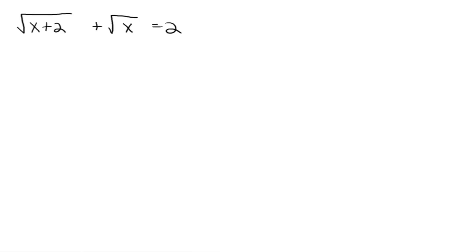This one's got a couple of radicals in it. The most common error made is to just square each individual part and get x plus 2 plus x is equal to 4. But that is not even close to being correct. You have to square the entire side, not just each individual part. Just like before, isolate a radical. Let's isolate the square root of x plus 2.